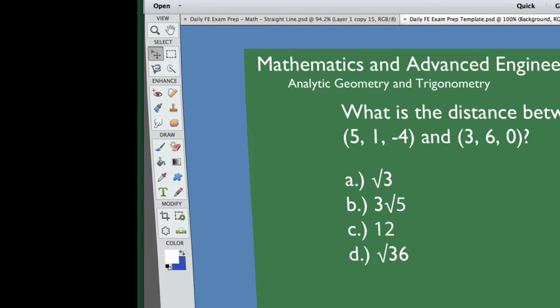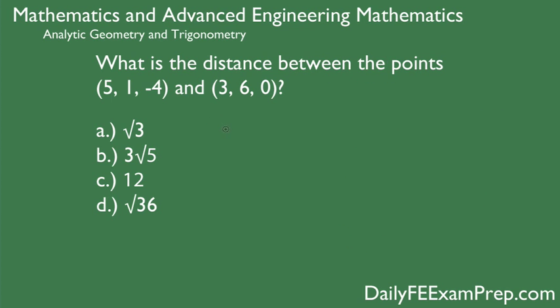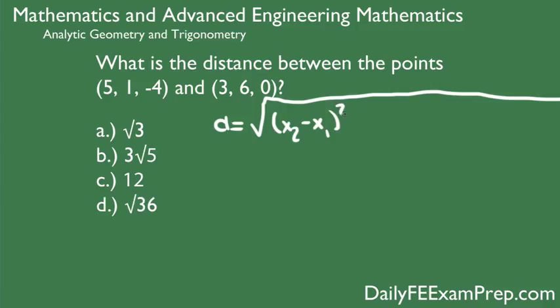So let's get started. We know that the formula for this is going to be d equals the square root of x2 minus x1 squared plus y2 minus y1 squared plus z2 minus z1 squared. So let's go ahead and plug that into our formula.